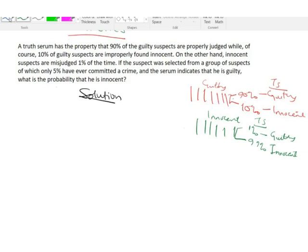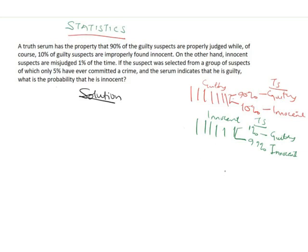The third part is where what we are asked to find lies. A suspect was selected from a group of people where only 5% have ever committed a crime — meaning 5% of them are guilty. Among these people, 5% are guilty while the remaining 95% are not guilty, and the serum indicates that this person is guilty.